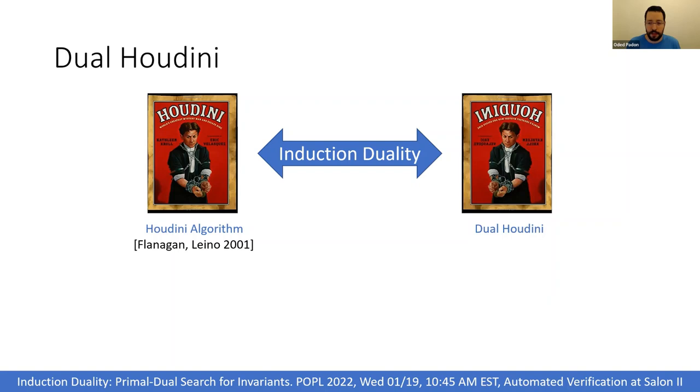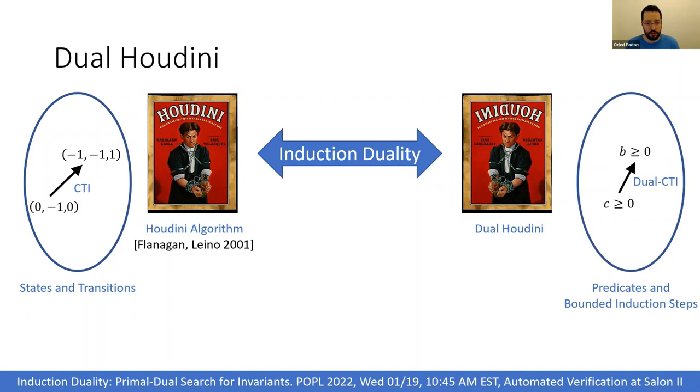As part of the operation of Houdini it finds counterexamples to induction that are transitions between states, and similarly as part of the operation of dual Houdini it finds what we call dual counterexamples to induction, which are induction steps between new predicates.